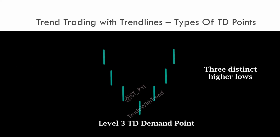Now let's take up a level three TD demand point. A TD demand point means you have higher lows on both sides. Why is this a level three TD demand point? Because we have one, two, three higher lows on the right side and three distinct higher lows on the left side. It has to be equal — sometimes you might get three higher lows on one side and seven on the other, but this point would still qualify only as a level three TD point, because you need the same number of distinct higher lows on both sides.